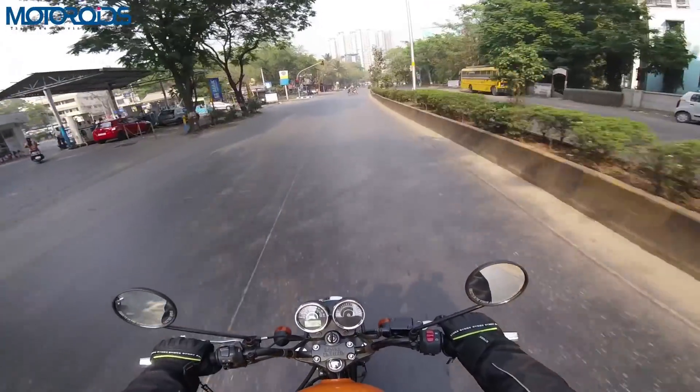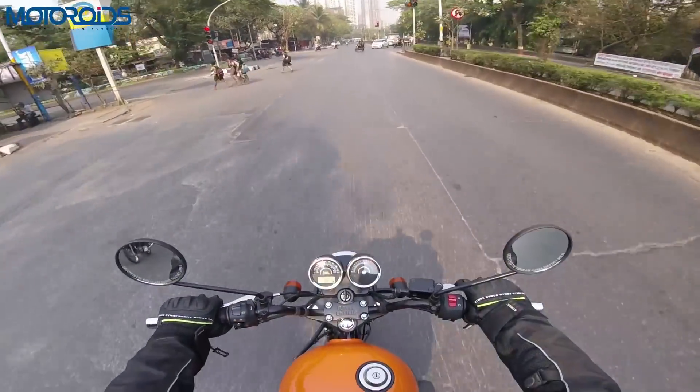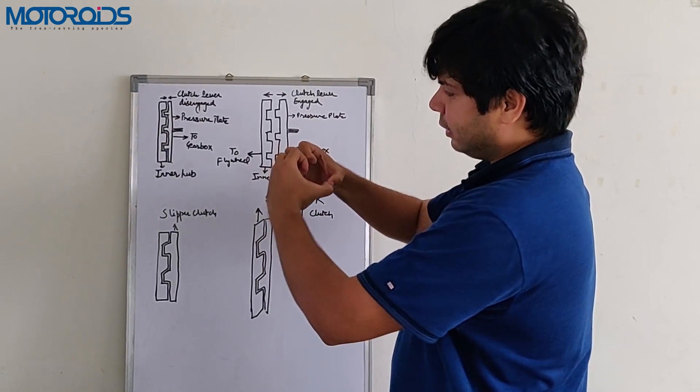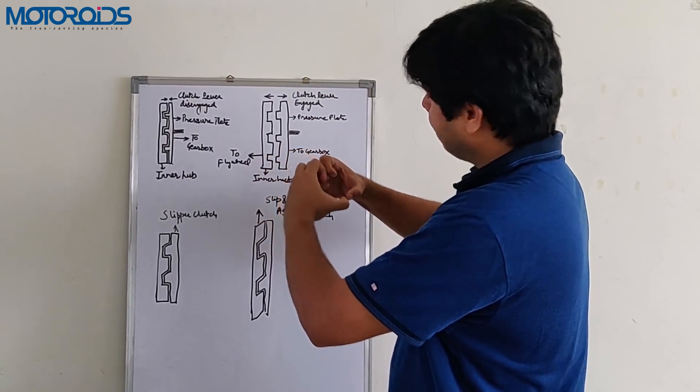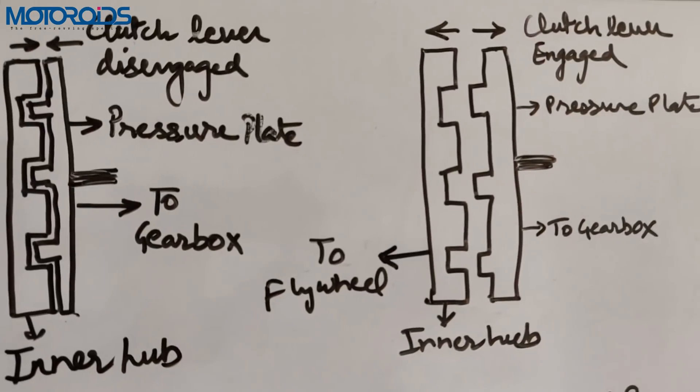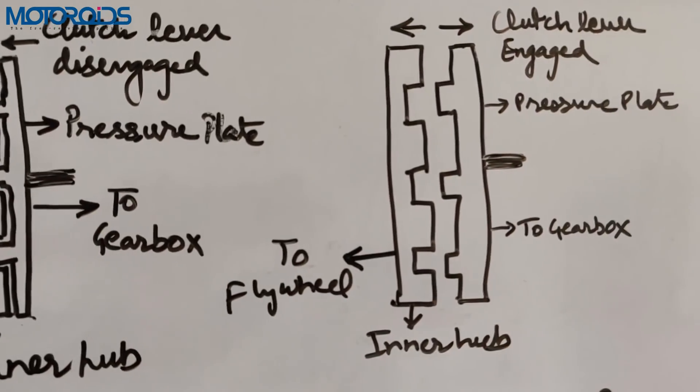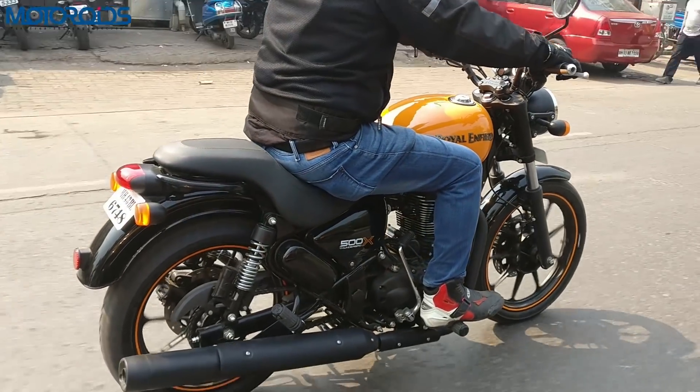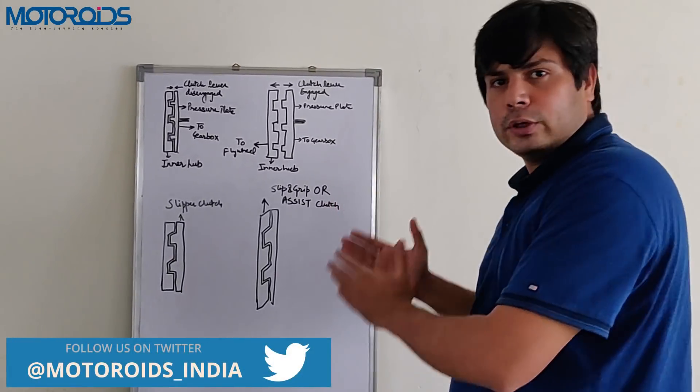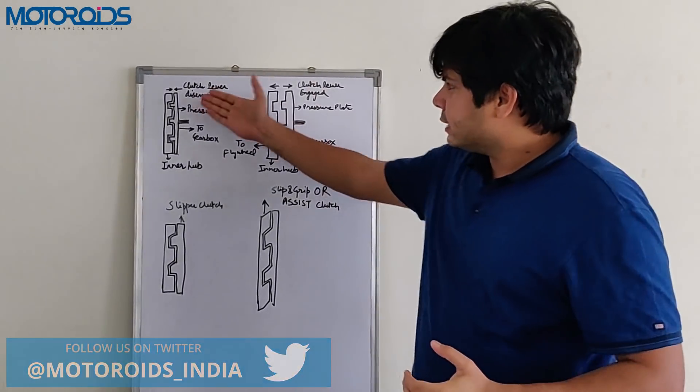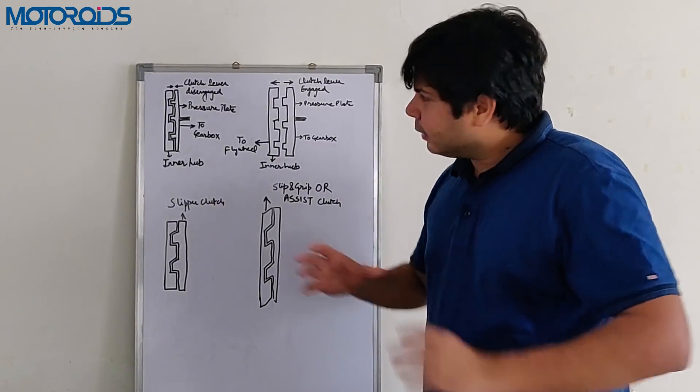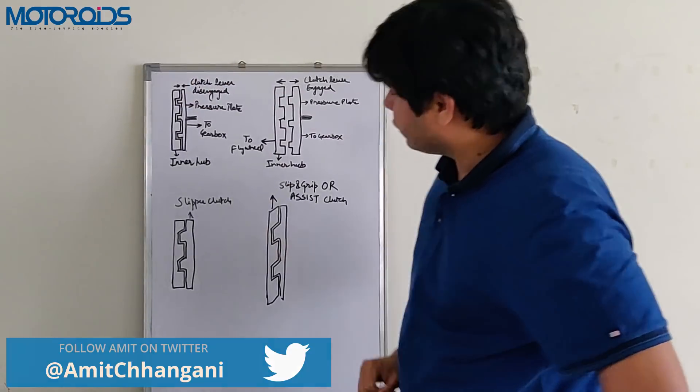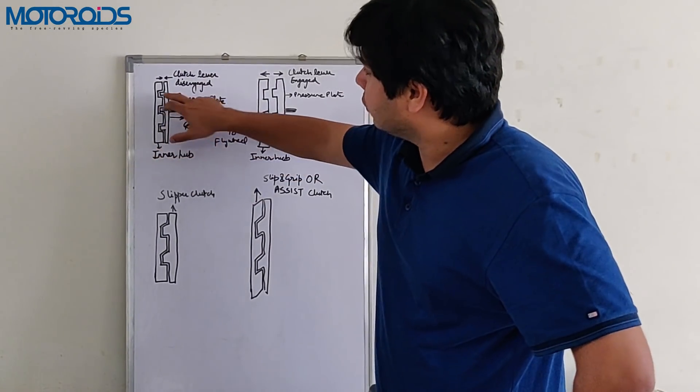When you engage the clutch lever, what happens is that the springs are stretched and the pressure plate is distanced from inner hub. In this manner the clutch plates are distanced and the inner hub is allowed to move freely without moving the drive that goes to the gearbox. This is required when you don't want the drive to be transferred to the wheel. As you can see here, if you really look at it, the basic assembly of such a system is like these square notches.